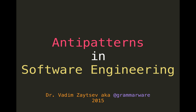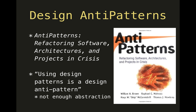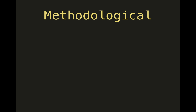Now, a little bit about negative patterns in software engineering. This book came out about 20 years ago, quite soon after the design patterns book. One of the ideas was that if you're using design patterns, it is already an anti-pattern, because there is not enough abstraction in your system. I'm presenting a couple of anti-patterns — some from the book, some not. Copy-paste programming, for example, is when instead of developing a new solution, you copy-paste code from somewhere else within your codebase or from Google.